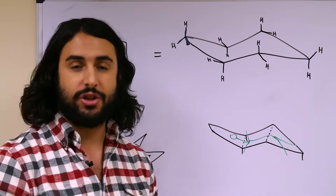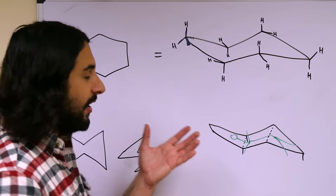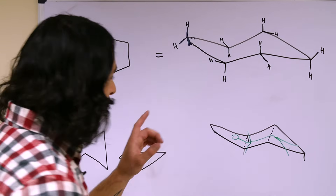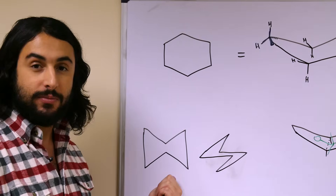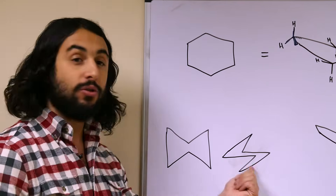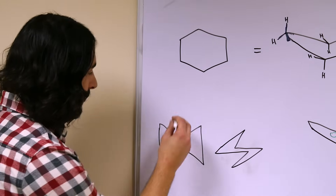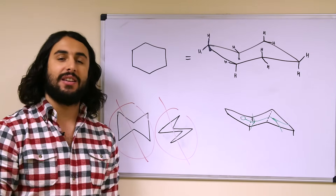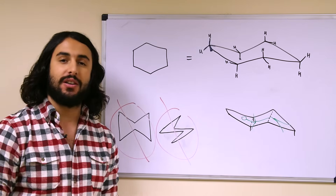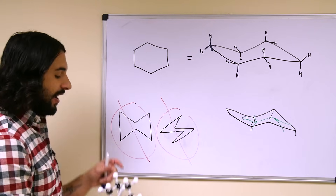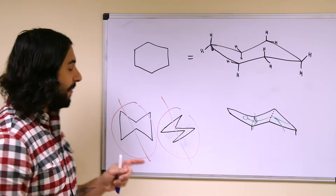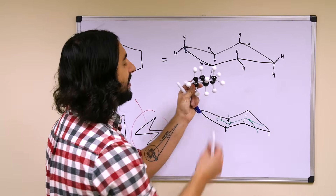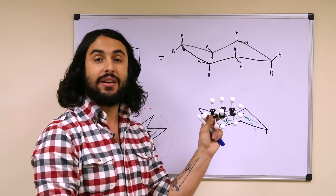It can be tricky at first to draw chairs. The reason it's called a chair is because it kind of looks like a chair. A couple of common mistakes: we have bow tie syndrome — we do not want to draw bow ties, nor do we want to draw lightning bolts. We don't want any of the lines on the chair to even approach verticality, because we need to be able to look at a chair and tell which is the leftmost and which is the rightmost carbon.